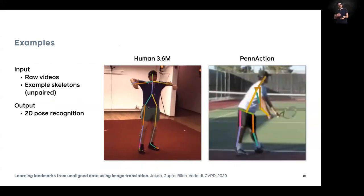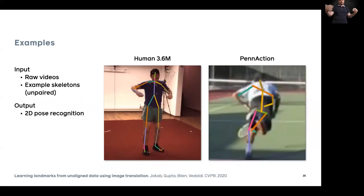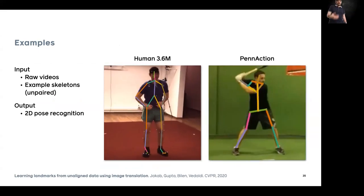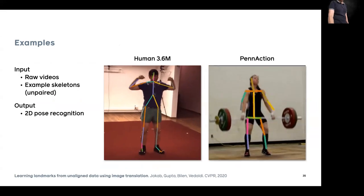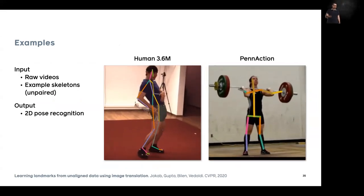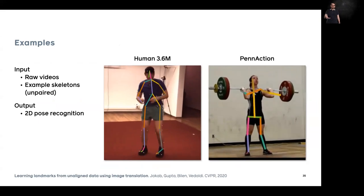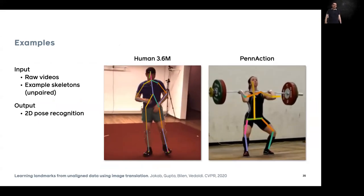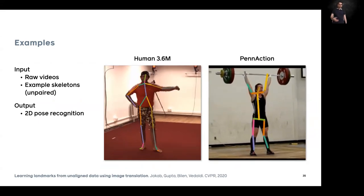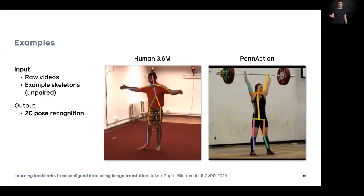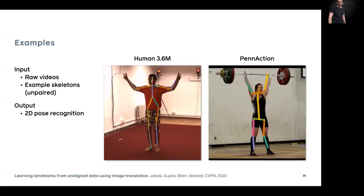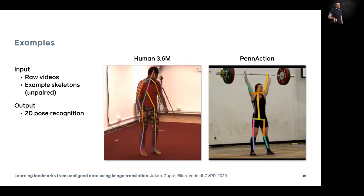This method also works for human bodies, though it is a harder task. For faces, the unsupervised method is actually competitive with supervised approaches to the point where manual labels could potentially be replaced. For bodies, quality is not yet comparable to supervised methods with manually annotated labels, but still pretty good.